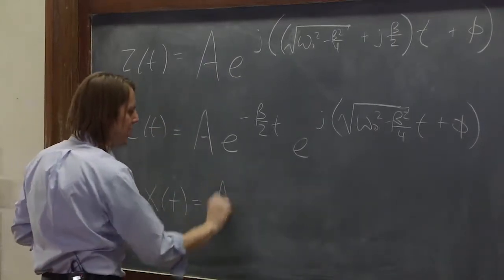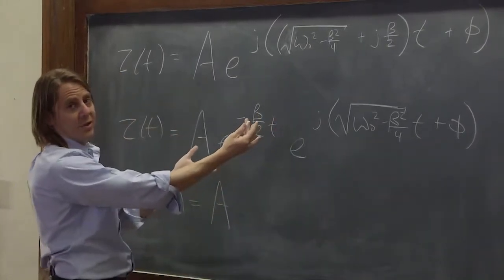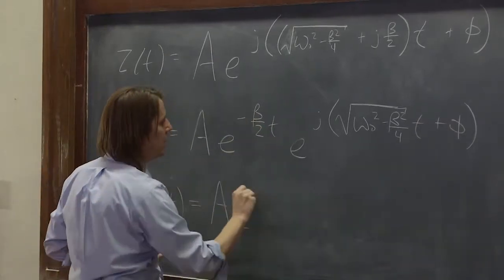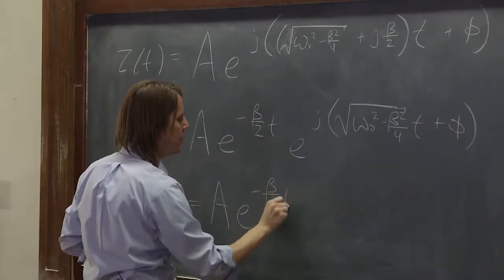Take the real part of all this. The real part of A is A. The real part of this is just this. This is not complex. This is just E to the minus beta over 2T.